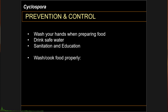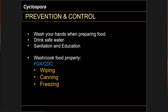Prevention and control of Cyclospora is very similar to Cryptosporidium prevention and control: washing your hands properly, especially when preparing food, drinking safe water, and basic sanitation and education. The U.S. FDA and CDC recommend the following actions to prevent Cyclospora infections: wiping your food, canning your food, and freezing your food.